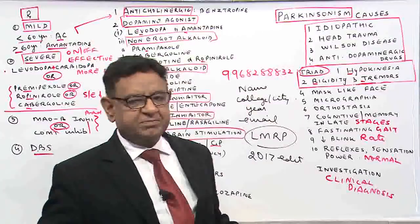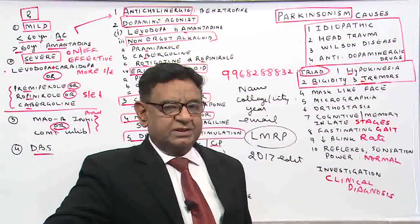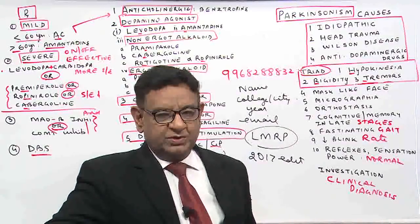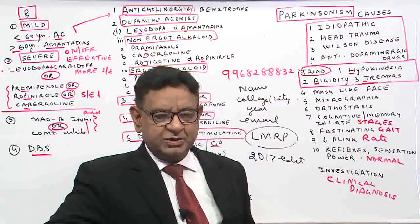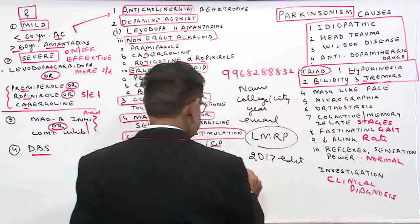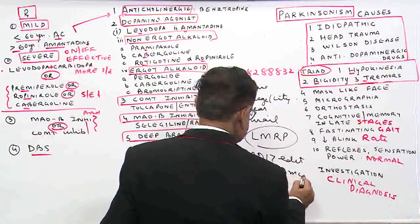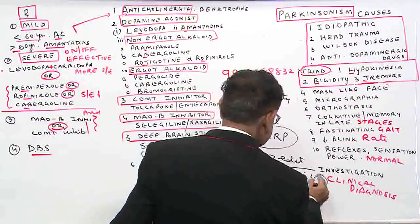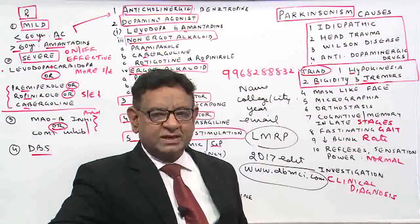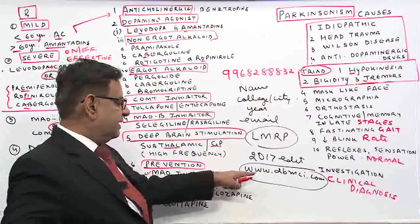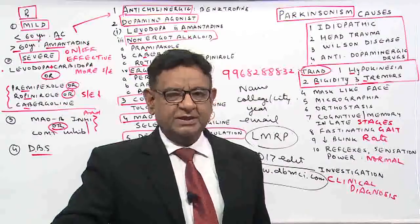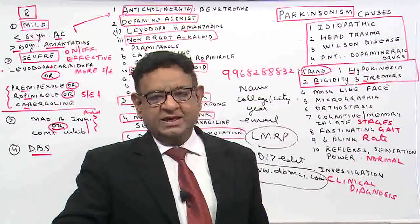Every subject after each chapter has last-minute revision points. Across all 19 subjects, you can read all last-minute revision points in just one day. These books are now on sale at a highly discounted price — you can visit our website www.dbmci.com. Many students were asking on WhatsApp how to get the books, so I thought it better to announce it. I hope you liked the lecture. Please give feedback and thank you very much for watching this video.